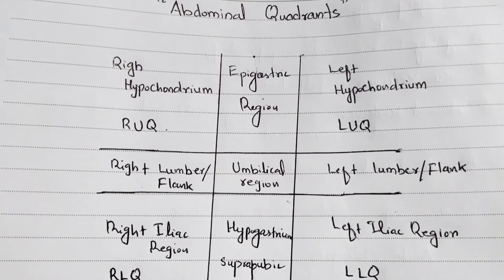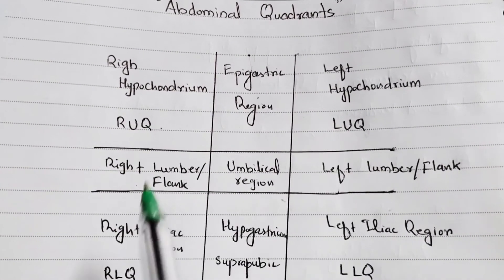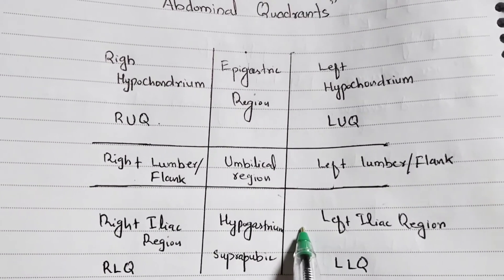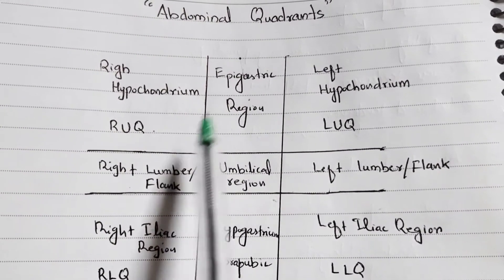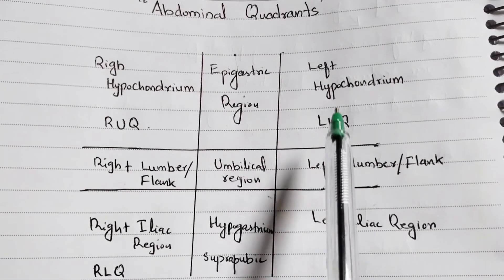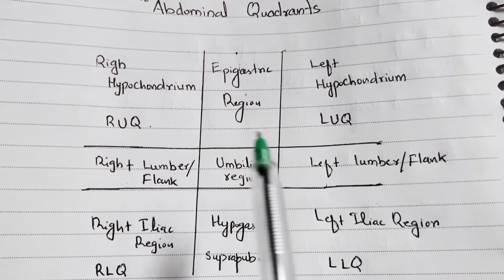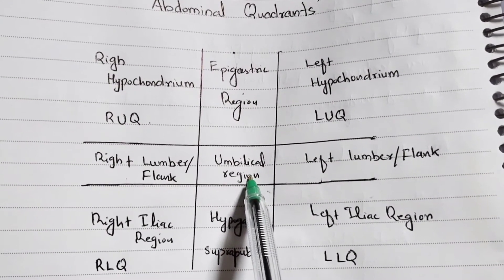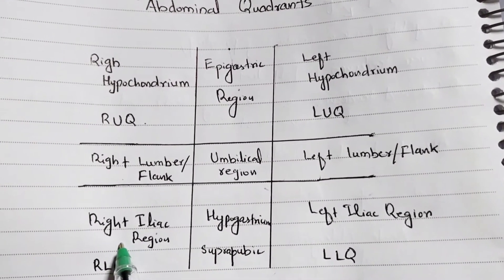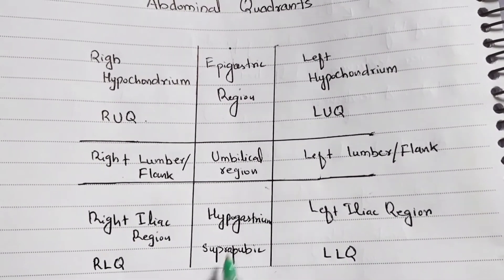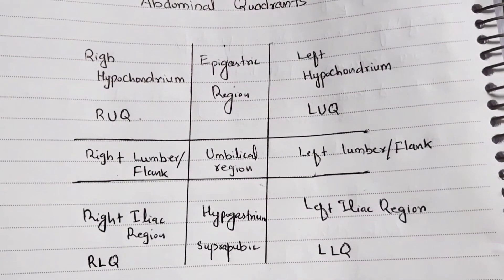We divide the abdomen into four quadrants: right upper quadrant, left upper quadrant, right lower quadrant, and left lower quadrant. In further division we have the epigastric region, right lumbar or right flank, umbilical region, left lumbar or left flank, right iliac region, hypogastric or suprapubic, and left iliac region.